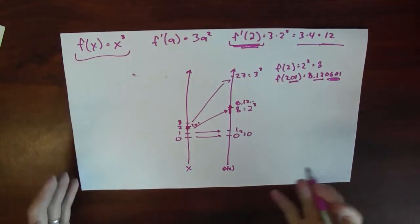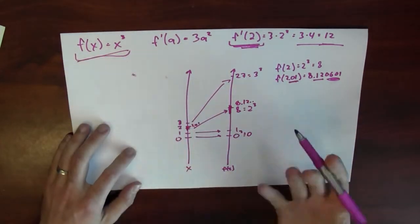So that's some idea of what the derivative is in this specific example of this function, f of x equals x cubed.